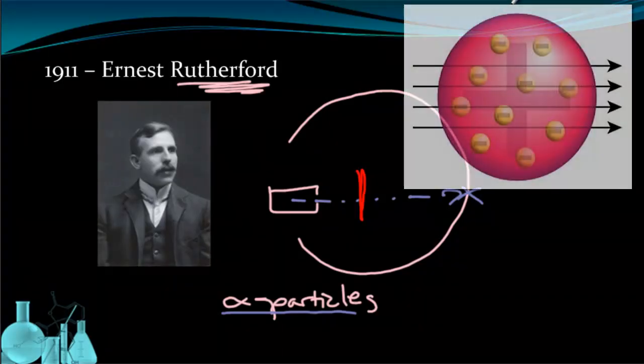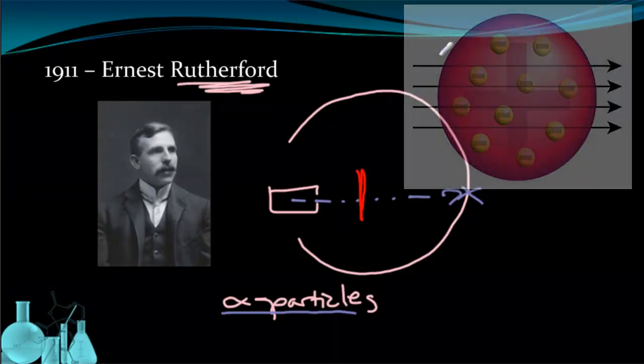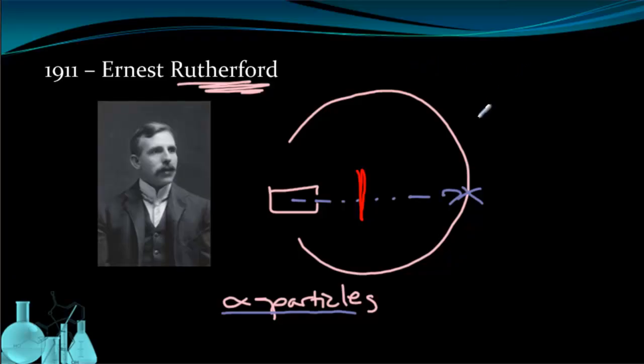Let's take a look at why he expected that. So here we have the expected model of the atom and why he thought everything was going to go right through. We have a picture of Thomson's model right here. These black lines going through are the alpha particles. And you can see they're going straight through the atom without really hitting any resistance. An analogy for what Rutherford expected to see was that he was basically shooting a cannonball at a piece of tissue paper. The cannonball should go right through.